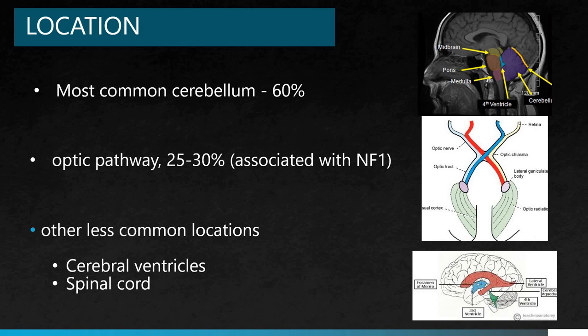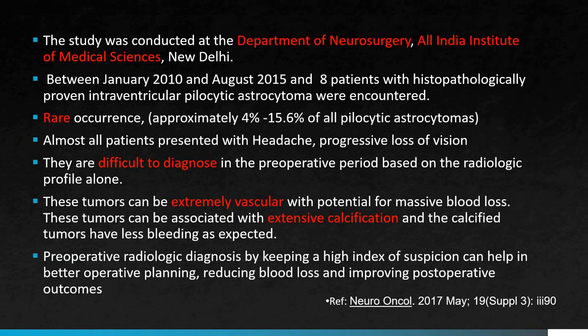They are often associated with neurofibromatosis type 1. Other less common locations are the cerebral ventricles and spinal cord. A study conducted by the Department of Neurology at All India Institute of Medical Sciences, New Delhi, from January 2010 to August 2015, encountered 8 patients with histopathologically proven intraventricular pilocytic astrocytoma. Their conclusion was that it is of rare occurrence, almost all patients presented with headache and progressive loss of vision, and these tumors are extremely vascular with extensive calcification seen.